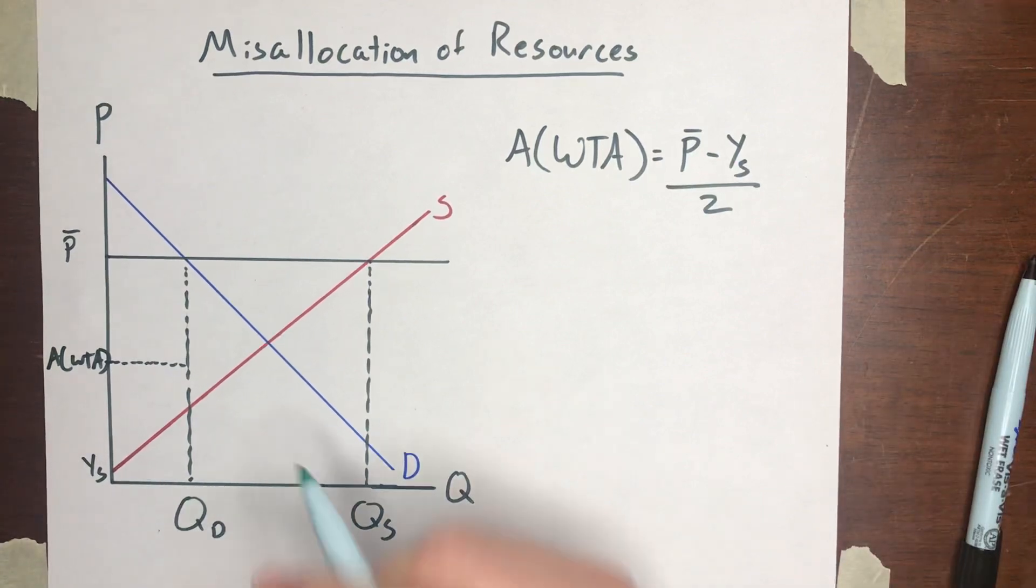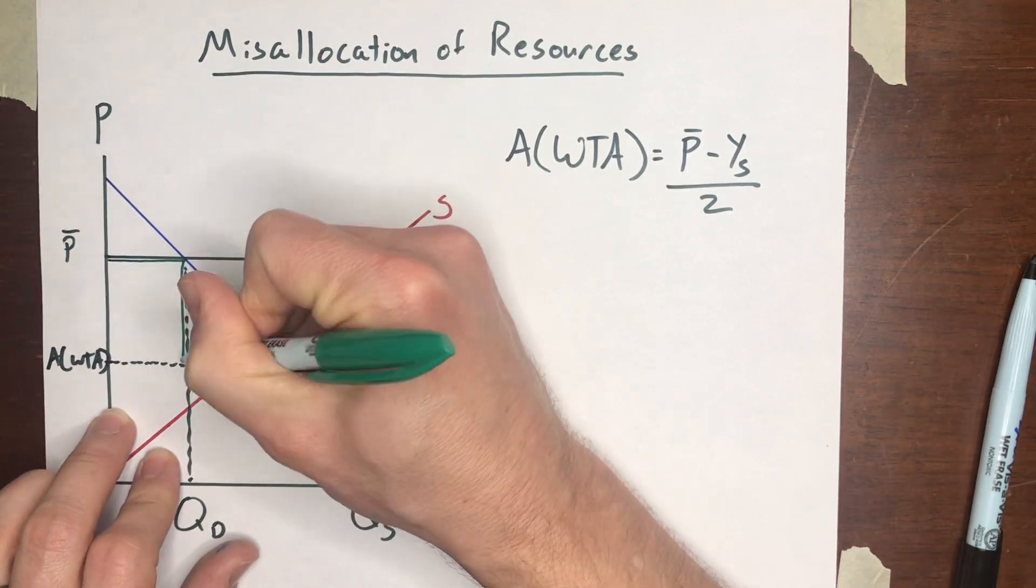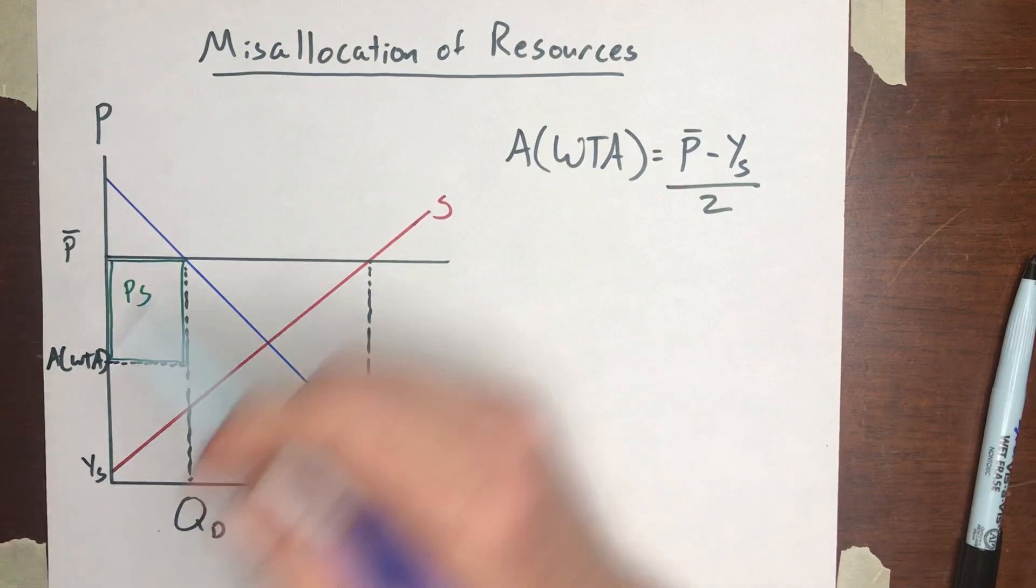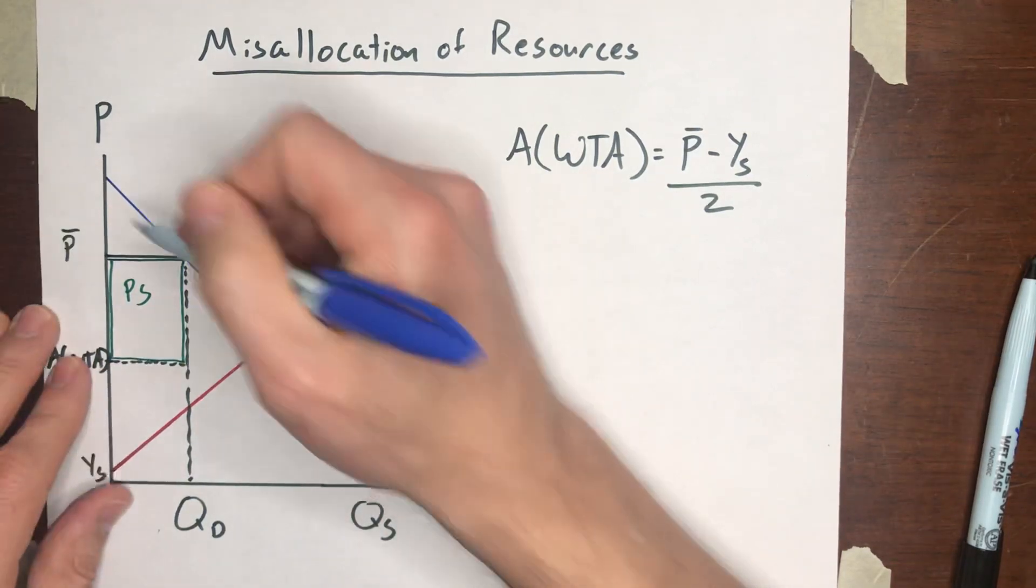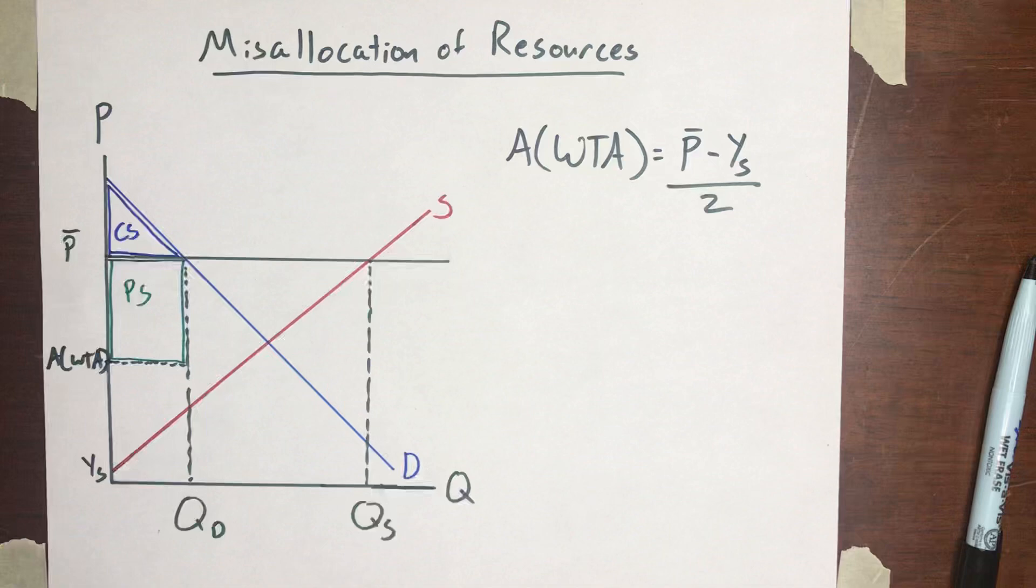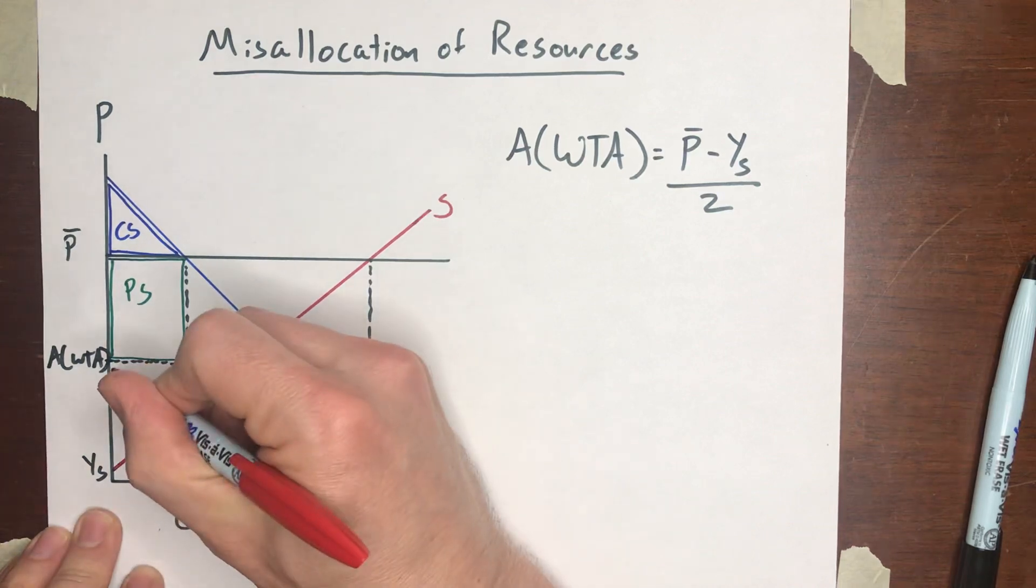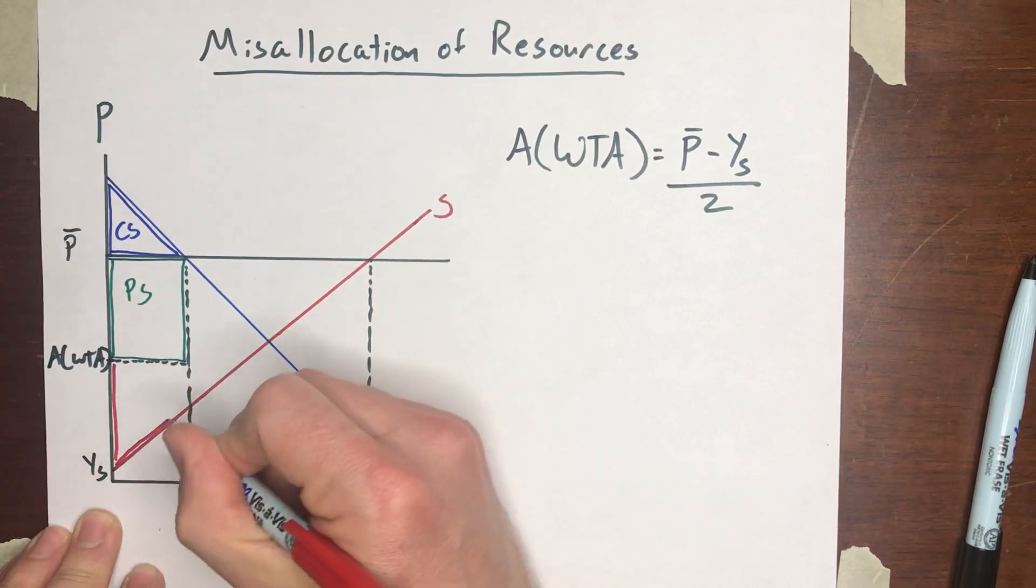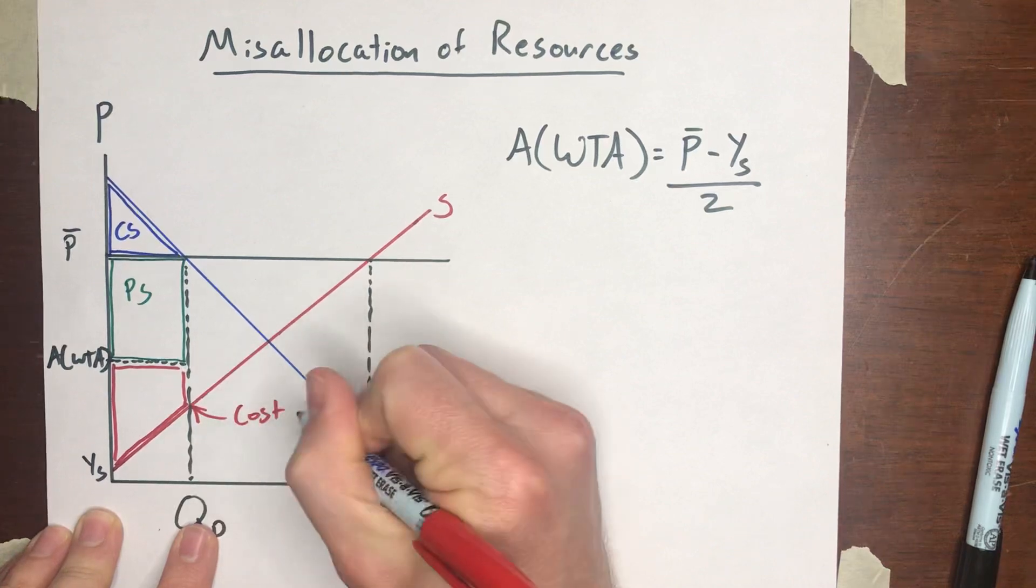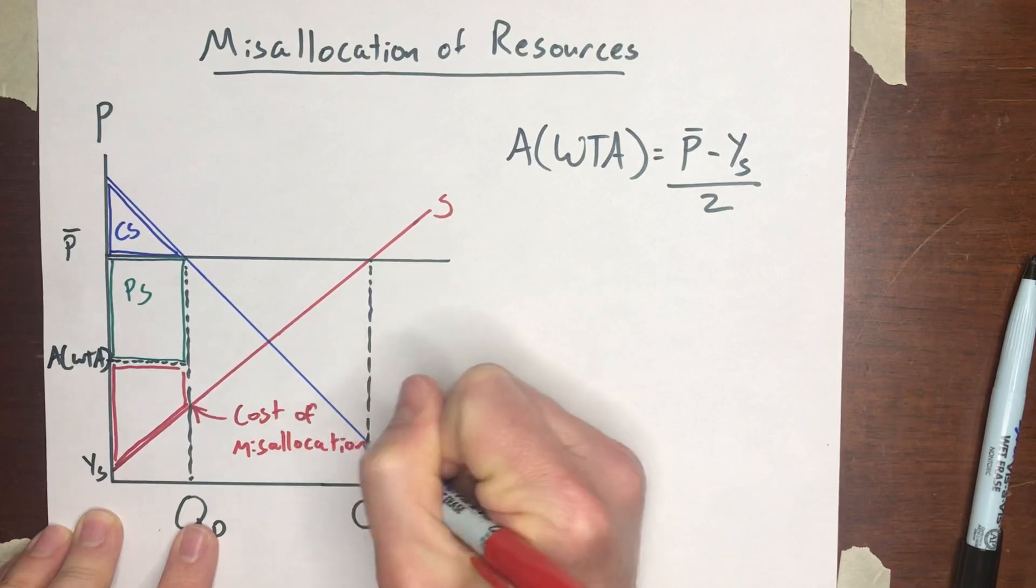Now, everything above that average willingness to accept and below the legislated price, that's going to be the amount of producer surplus that is captured. Everything above the legislated price and below the demand curve, that will show us the consumer surplus. And then we're still left with this deadweight loss. This cost from misallocation. It's going to be this area here. And we will call that the cost of misallocation.